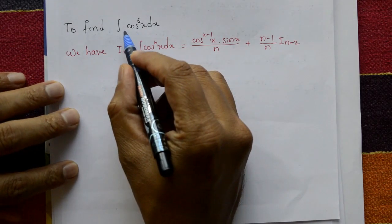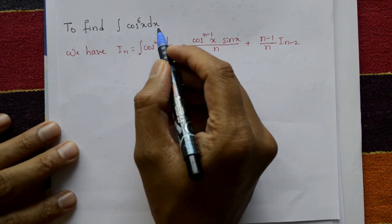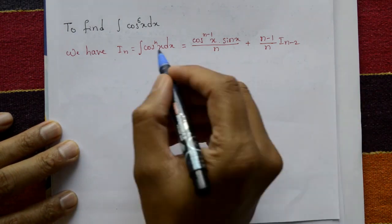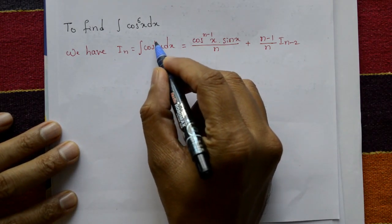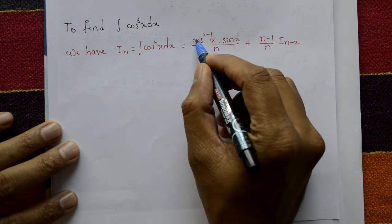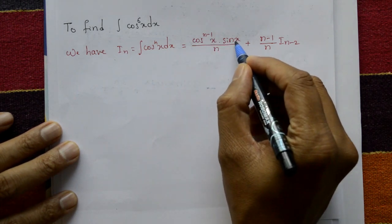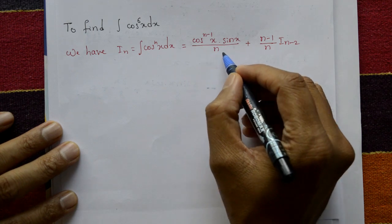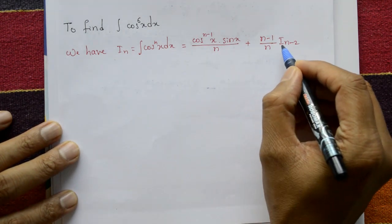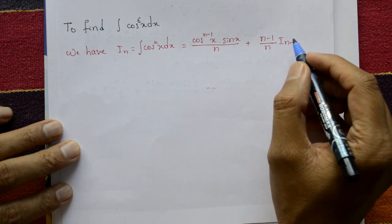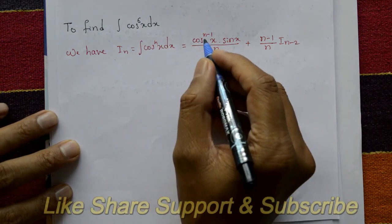To find the integration of cos to the 6th power of x dx. We have a formula: I_n equals the integration of cos^n x dx, which equals cos^(n-1) x times sin x divided by n, plus (n-1)/n times I_(n-2). This is the cosine reduction formula.